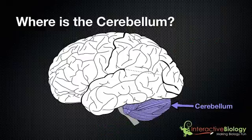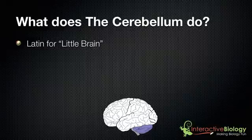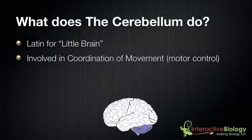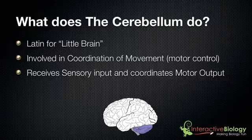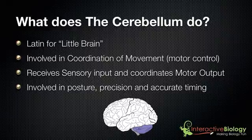Now let's answer the question: what does the cerebellum do? The cerebellum is Latin for 'little brain.' It's involved in coordination of movement — in other words, motor control. It receives sensory input from the body, and then it coordinates the motor output. And it's involved in posture, precision, and accurate timing.